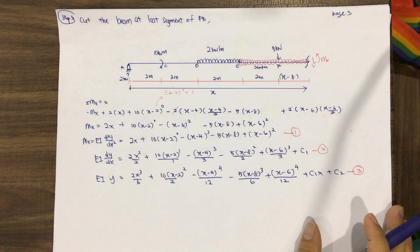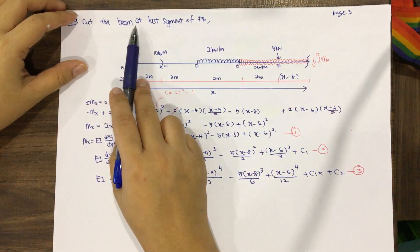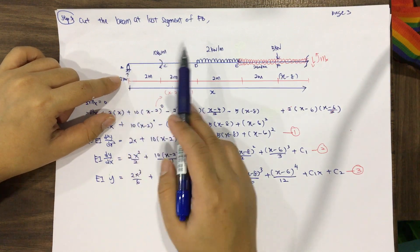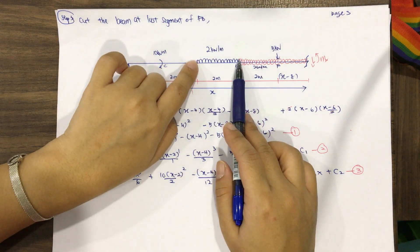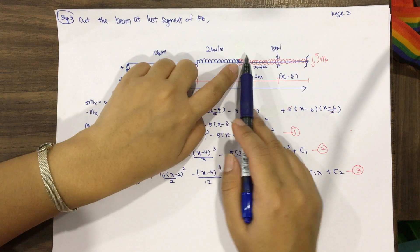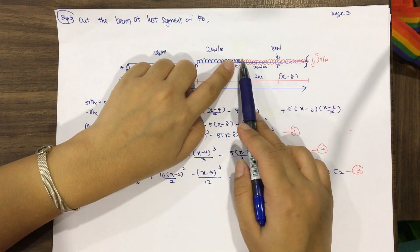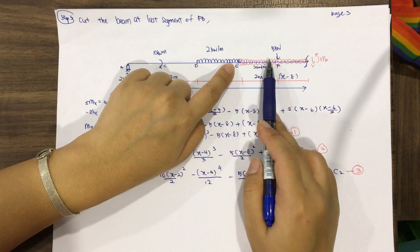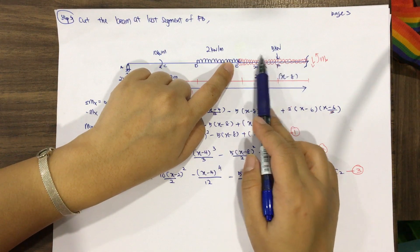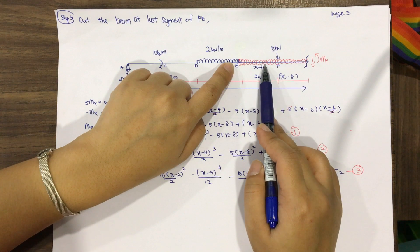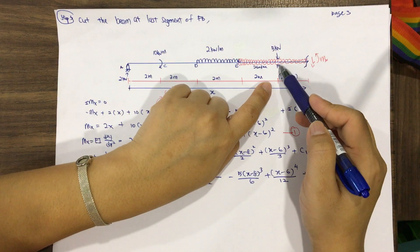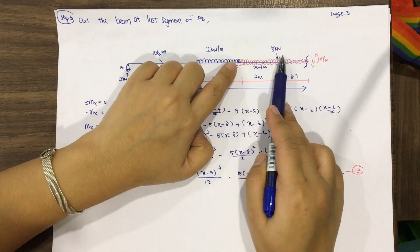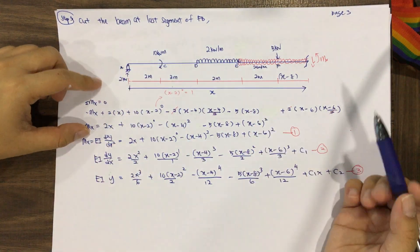Step three: cut the beam at the last segment. You need to cut it just before the end, so we have support A with 2 kilonewtons, the 10 kilonewton-meter moment, and the uniform distributed load of 2 kilonewtons per meter. You need to extend the UDL to the end of the cut section — extend it both upward and downward — so when added together they cancel out and do not affect the result.